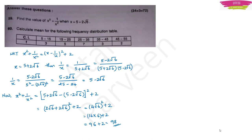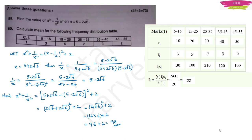Question 60: Calculate the mean for the given frequency distribution. Make a table with class intervals, find xi (mid-values): 10, 20, 30, 40, etc. Multiply fi × xi for each row: 30, 100, 210, 120, 100. Summation of fi×xi = 560 and summation of fi = 20. Mean = 560/20 = 28.